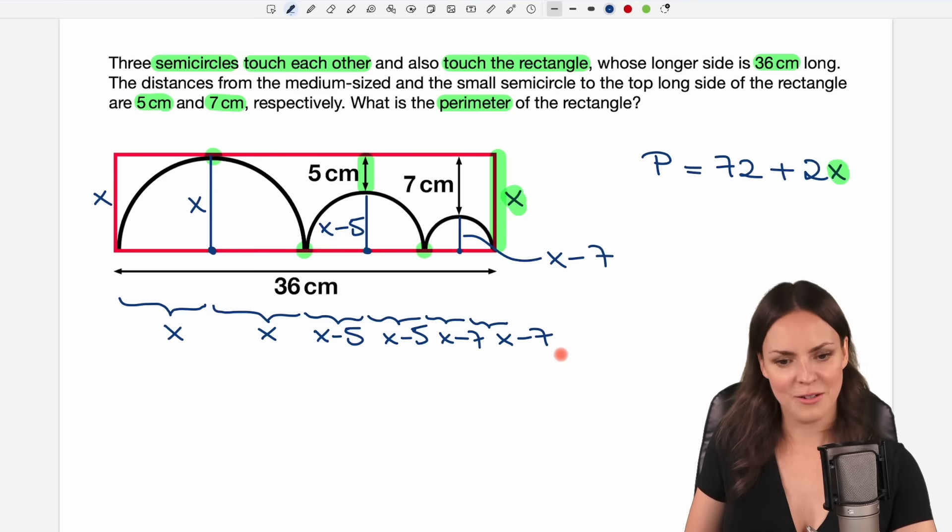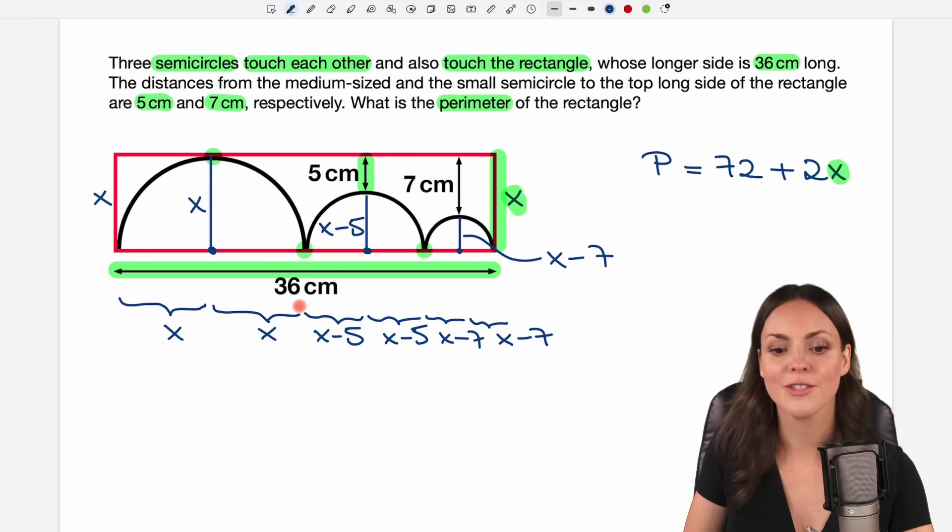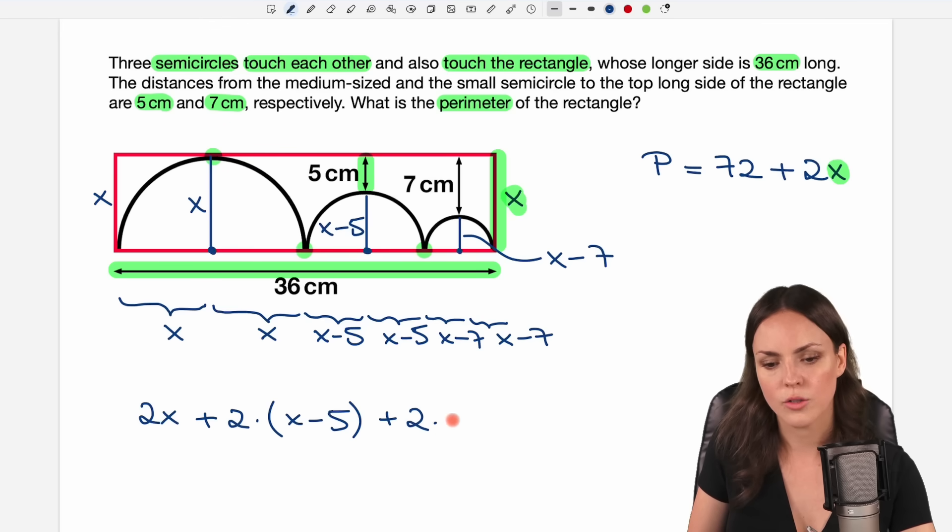How does this help us now? Well we know the length of the entire side so if I add all of these things here I have to get a result of 36. So I have 2x here, then I add 2 times these x minus 5 parts so I have 2 times, and then I have to write the x minus 5 in parentheses, and then I have 2 times my other part here so 2 times x minus 7 and all of this has to equal 36. And this is an equation and I can solve this equation for x to find my perimeter then in the end.